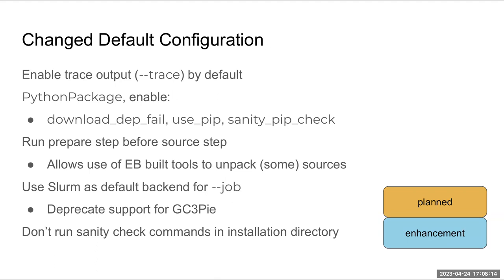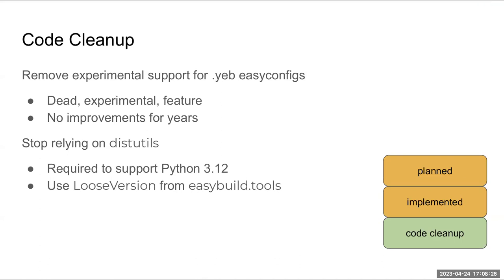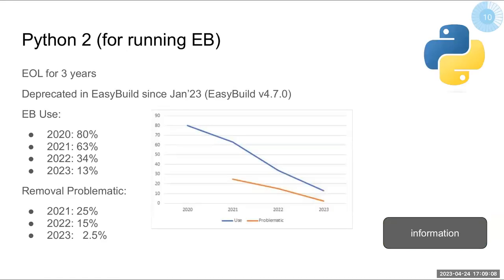An enhancement: sanity checks will no longer run in the installation directory — they'll run in a completely separate directory so you don't leave artifacts behind. For code cleanup: support for YAML-based EasyConfigs has already been removed, as there had been no updates, no real use, and nobody asking for or implementing features for it. We're also removing direct use of distutils since Python is deprecating it; for LooseVersion we've moved the relevant part inside EasyBuild.